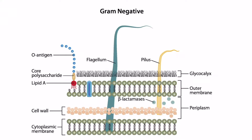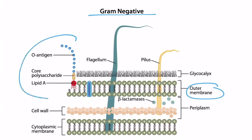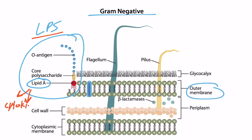Looking at gram-negative bacteria, we have the outer membrane and the entire lipopolysaccharide (LPS), the most important part of which is lipid A. When the bacteria dies, the outer membrane will release this lipopolysaccharide, and then lipid A will induce the release of lots of cytokines, which leads to shock. Right here we can also see the porins, which are another part of the outer membrane.